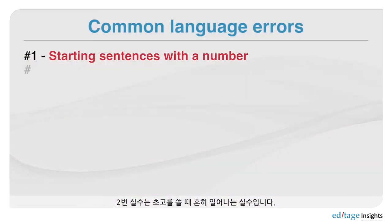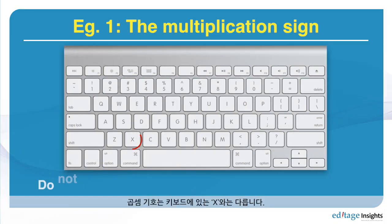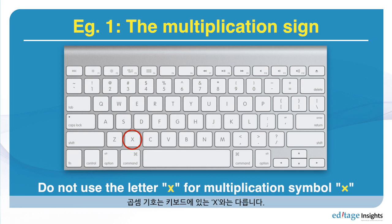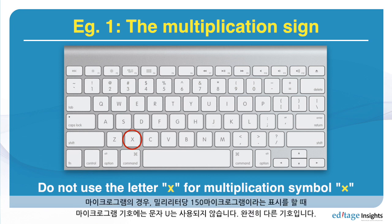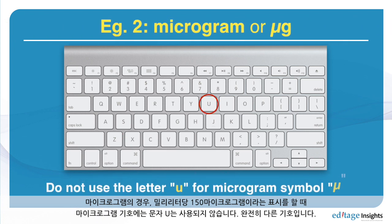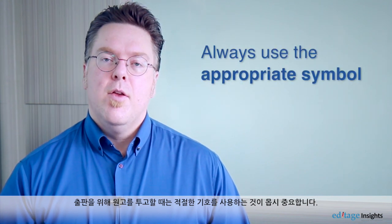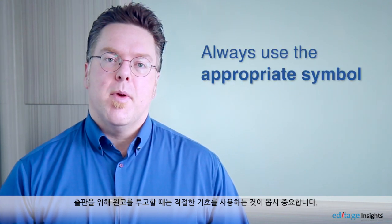Mistake number two is common when people are writing a draft. When writing a draft, they don't like to insert the proper symbols. For example, the multiply sign is not the letter X on the keyboard. Similarly, the micro symbol — as in microgram, or '100 microgram per milliliter' — is not the letter U; it's a different symbol. It's important to use the proper symbol in your paper when you submit it for publication.